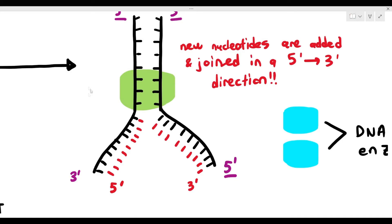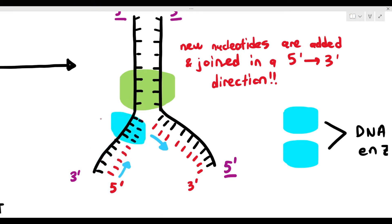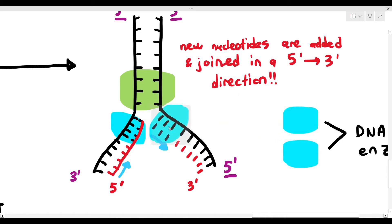The new nucleotides are added in a 5' to 3' direction. I've shown the arrow in which the DNA polymerase has to move. On one side, the DNA polymerase will have to move from the bottom to the top, but on the other side, it has to move from the top to the bottom. The DNA polymerase moves and forms the new strand on each side accordingly.